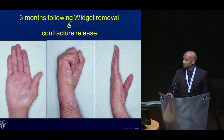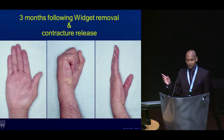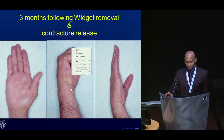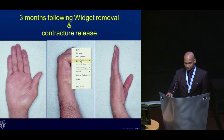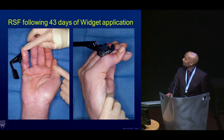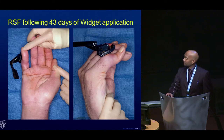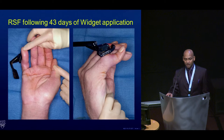A strap is placed on the wrist, and a boom arm is placed on the widget. Several different gauges of rubber bands — similar to dental elastics — are placed in a class two format. That previous photo was at six weeks. On this particular patient, there's also a secondary boutonniere deformity that developed, which can be addressed after removal of the widget.